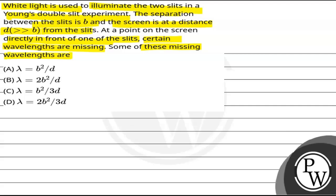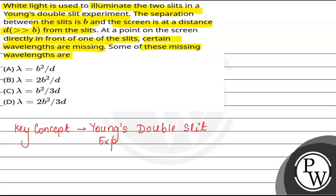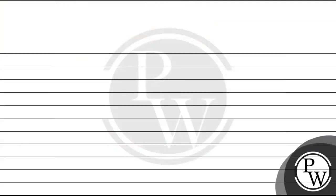So question में हमको given है कि हम एक experiment perform कर रहे हैं जिसका नाम है Young's double slit experiment. So सबसे पहले यहां पर जो हमारे पास key concept use होगा वो है Young's double slit experiment. उसके लिए सबसे पहले हमको diagram draw करना होगा. यहां slit S1 है और यहां slit S2 है. इन दोनों slits के बीच का जो separation है वो हमको b given है. यहां से किसी distance D पर हमने screen को रखा है. इस slit S1 के just सामने वाला जो point है, let us say यह point P है.